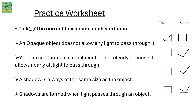Practice worksheet: tick the correct box beside each sentence. An opaque object does not allow any light to pass through it. You can see through a translucent object clearly because it allows nearly all the light to pass through. A shadow is always of the same size as the object. Shadows are formed when light passes through an object.